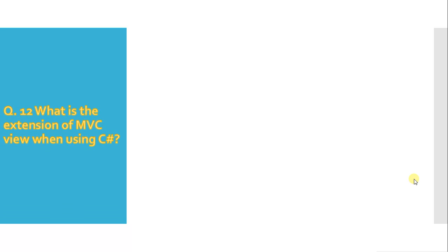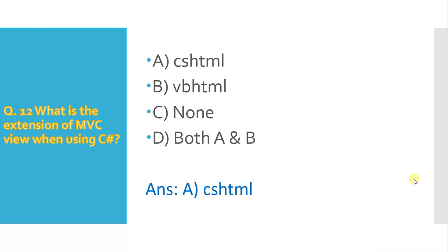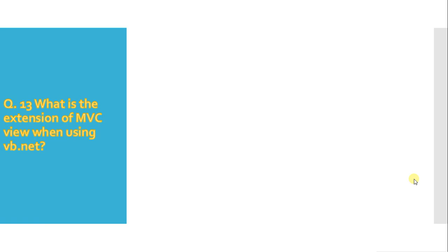Question 12: what is the extension of an MVC view when using C#? Option A is .cshtml, B is .vbhtml, C is none, D is both A and B. The answer is A, .cshtml — used for C# in ASP.NET MVC.